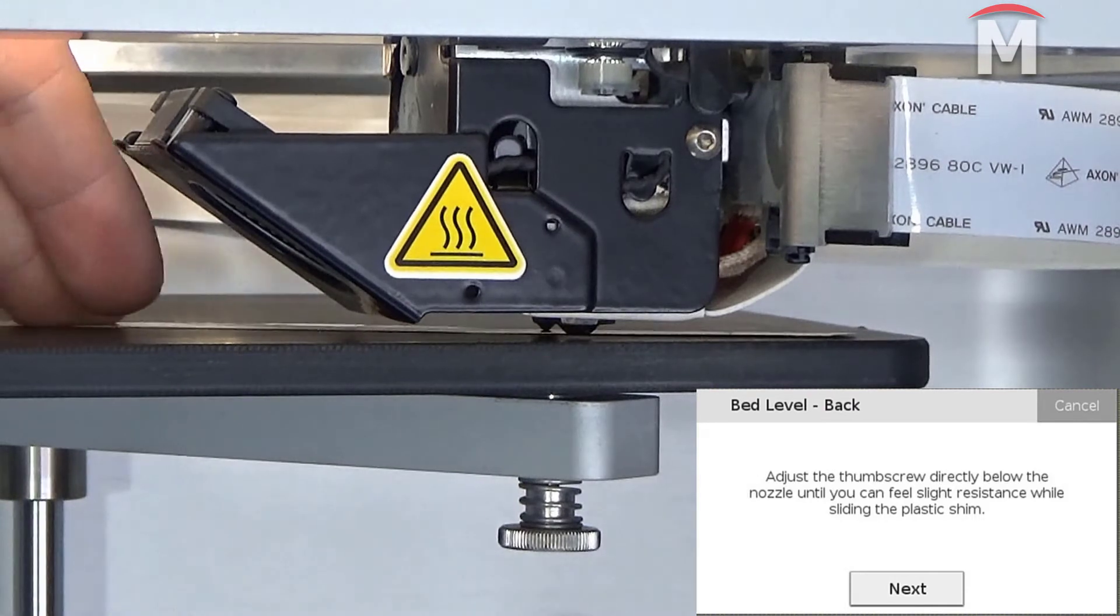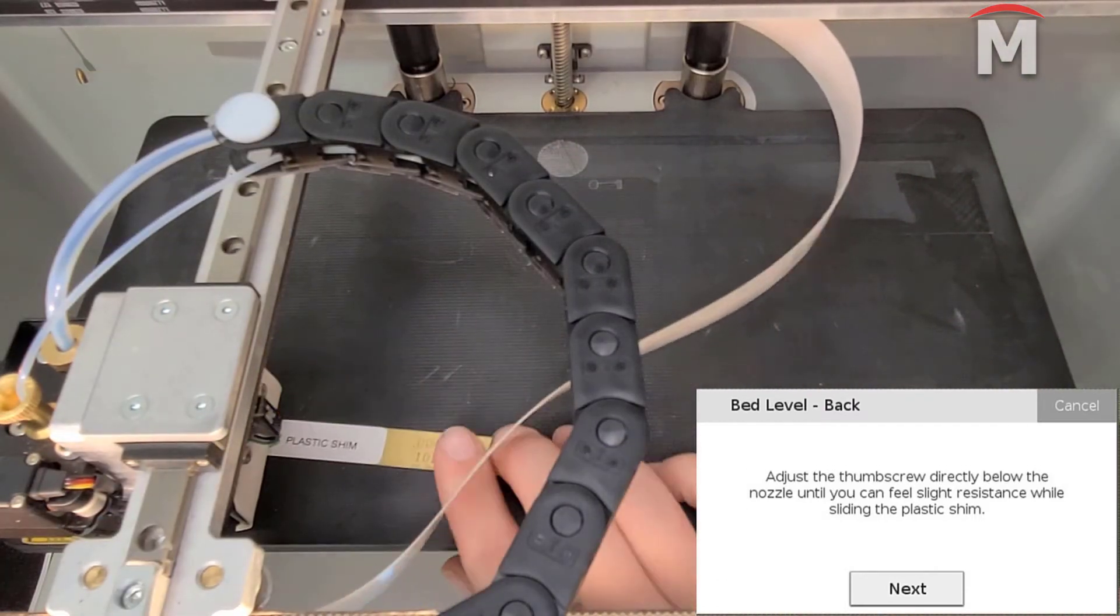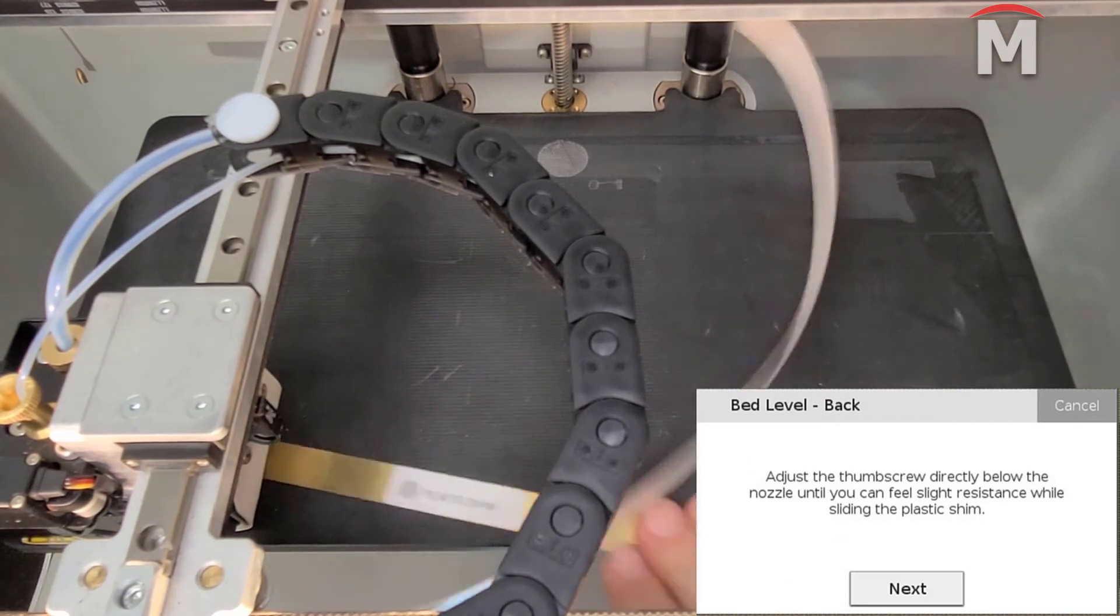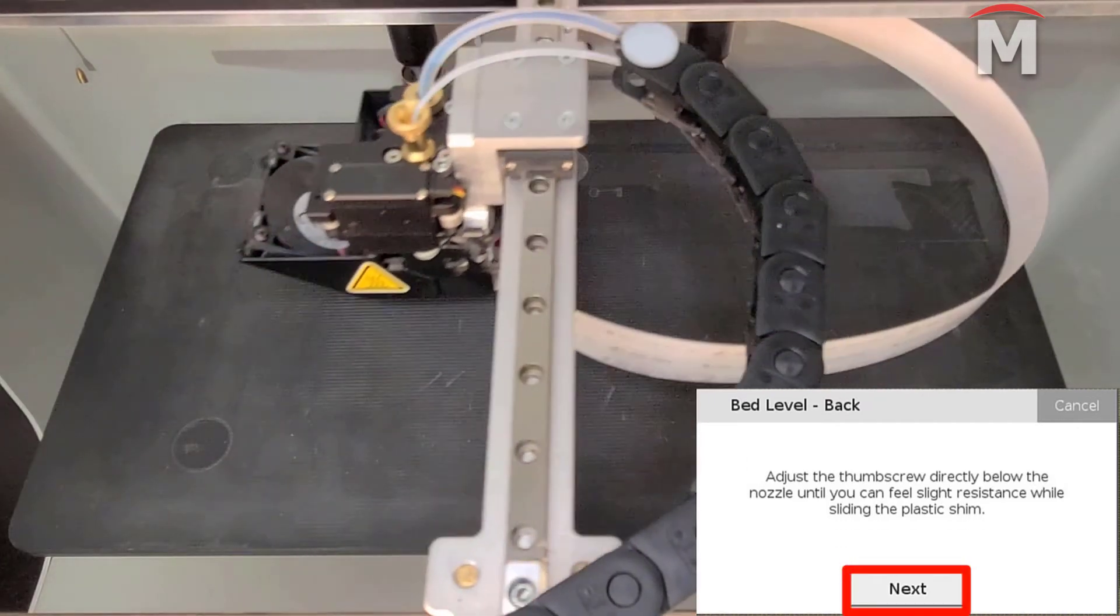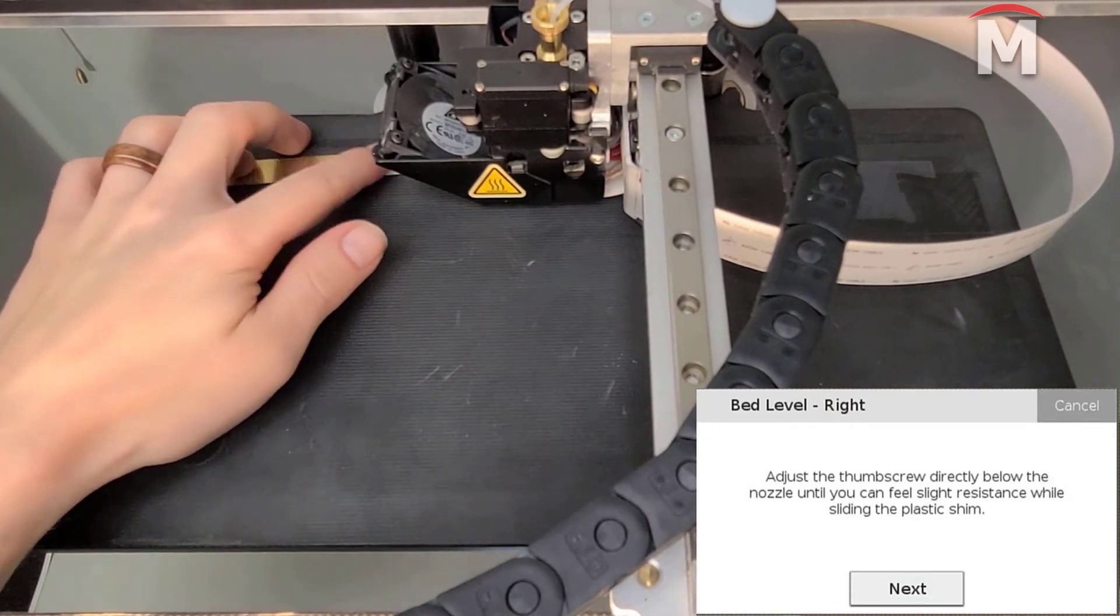We are going to now repeat this process for each of the other two thumb screws as prompted by the utility. If this is your first time running the shim bed level utility, you may need to repeat this process several times to develop a sense of the right amount of resistance.